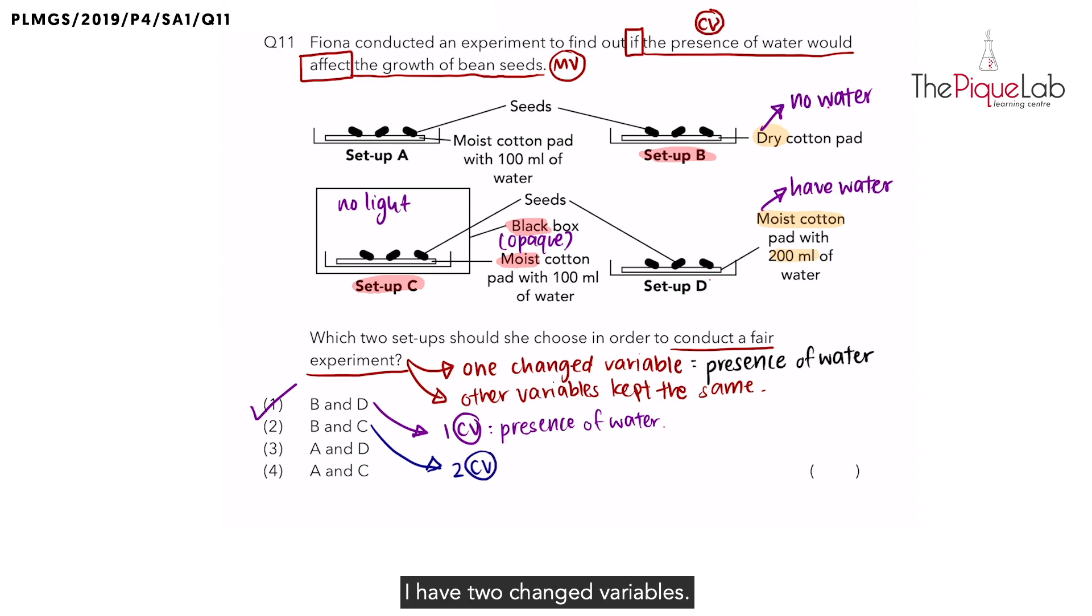So how many change variables do I have? I have two change variables, presence of water and presence of light. And since there are two change variables, it would not be a fair test. I cannot take this as my answer.